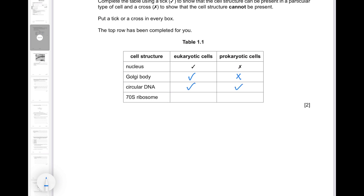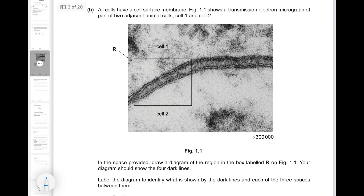The DNA in the nuclei of eukaryotic cells is in the form of chromosomes, which is not circular. However, mitochondria and chloroplasts in eukaryotic cells do have circular DNA. Again, 70S ribosomes are found in chloroplasts and mitochondria of eukaryotic cells, and prokaryotic cells also have 70S ribosomes. All cells have a cell surface membrane.